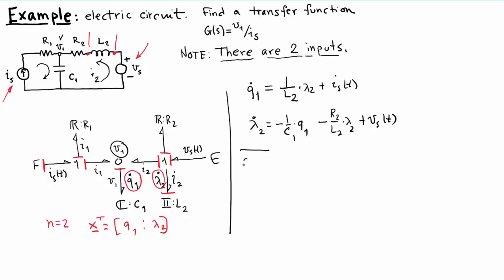Now as our outputs, we're going to want two. The first output is V1, which is the voltage right here. And then the second, let's take as the voltage across the inductor, which is just lambda dot 2. Let's call that V2, which is defined as lambda dot 2.